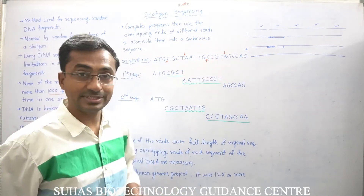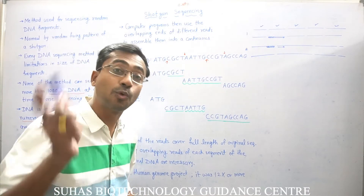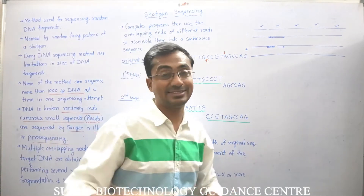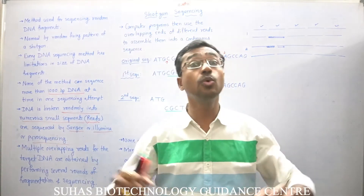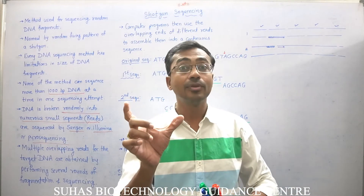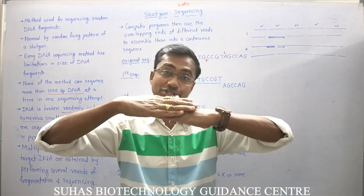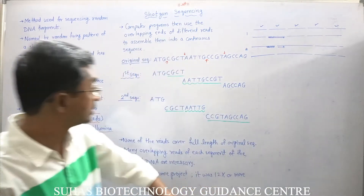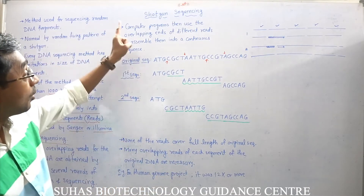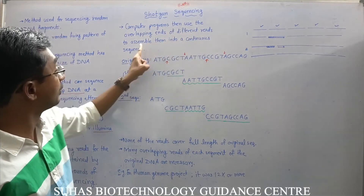In this way, the whole original sequence or the complete sequence can be assembled. So what is shotgun sequencing? Shotgun sequencing is a method to assemble the sequence of various DNA fragments by using the overlapping regions, and in this way the complete sequence can be determined.